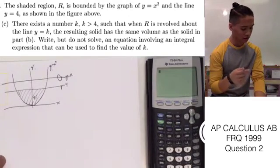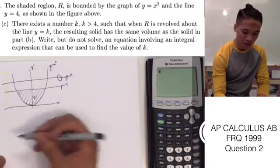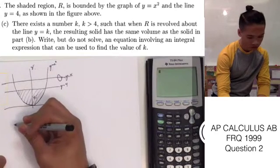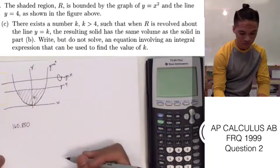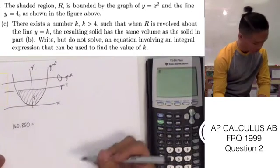So, what we can do is write down the value that we got in part B, which is 160.850. And we're going to have to equate this to something.